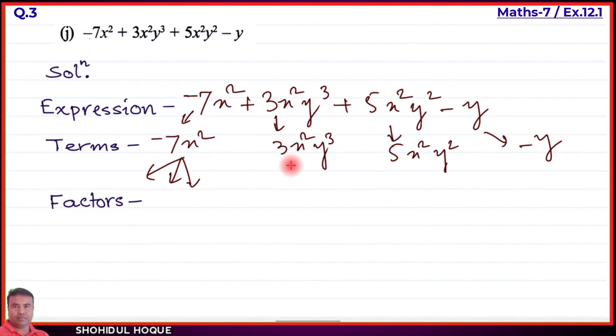The second term 3x²y³ has factors 3, x, x, y, y, and y - total six factors.